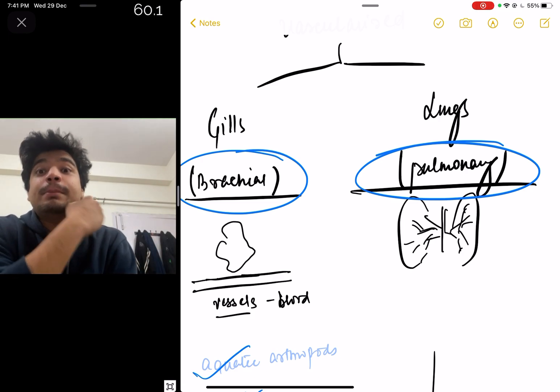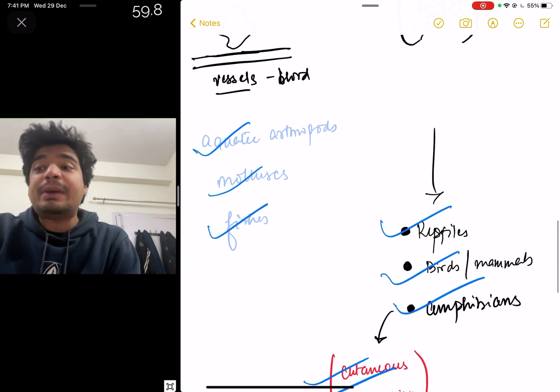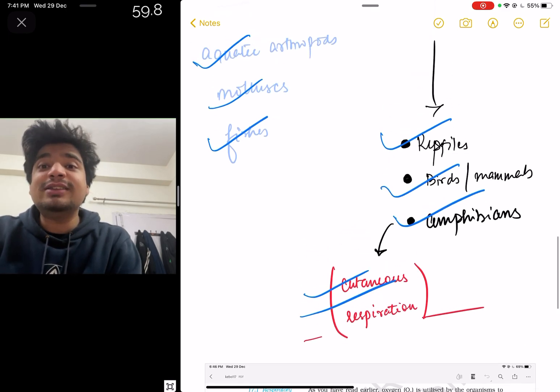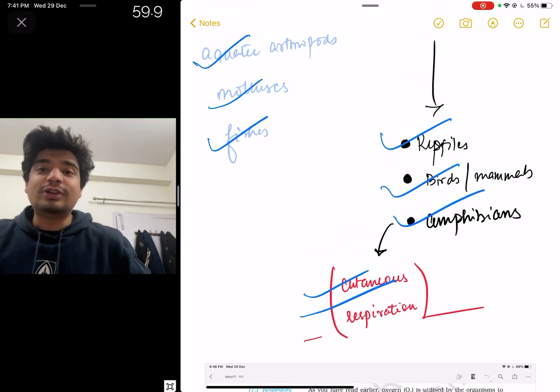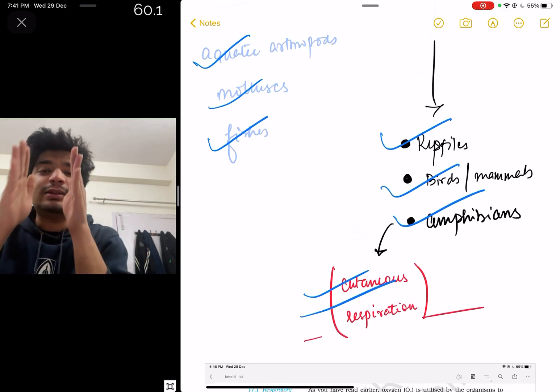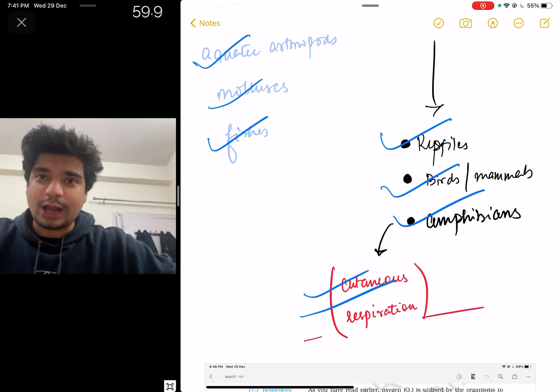In reptiles, birds, they all have lungs. Apart from that, amphibians also have lungs, but at the same point of time, they can use their skin also to respire. Their skin also acts as an organ that gets the oxygen in and gets the carbon dioxide out.